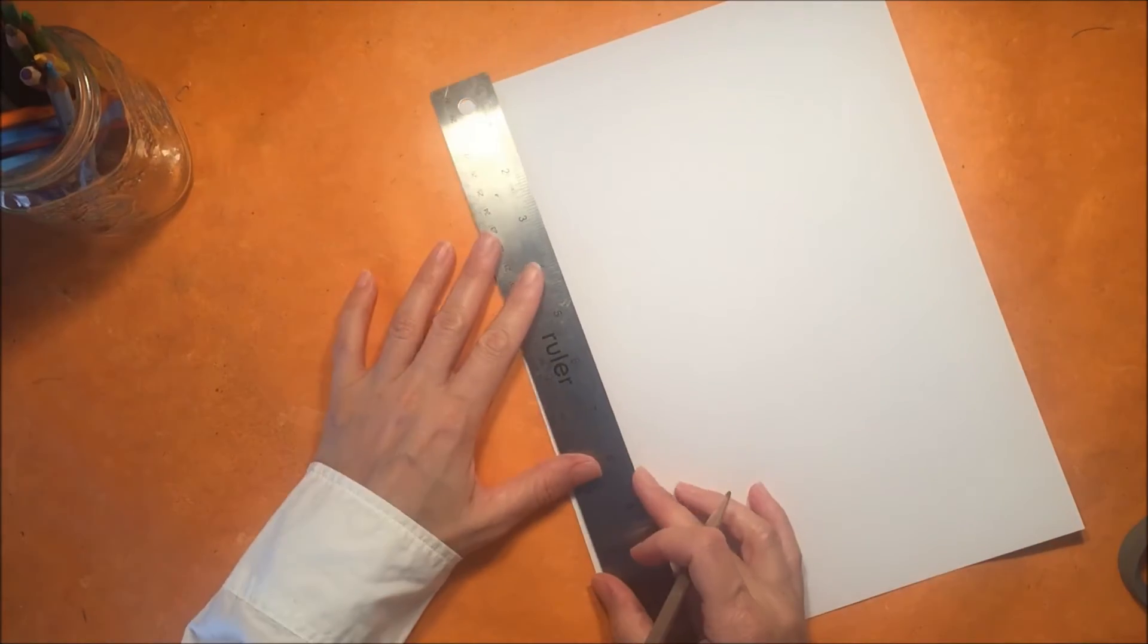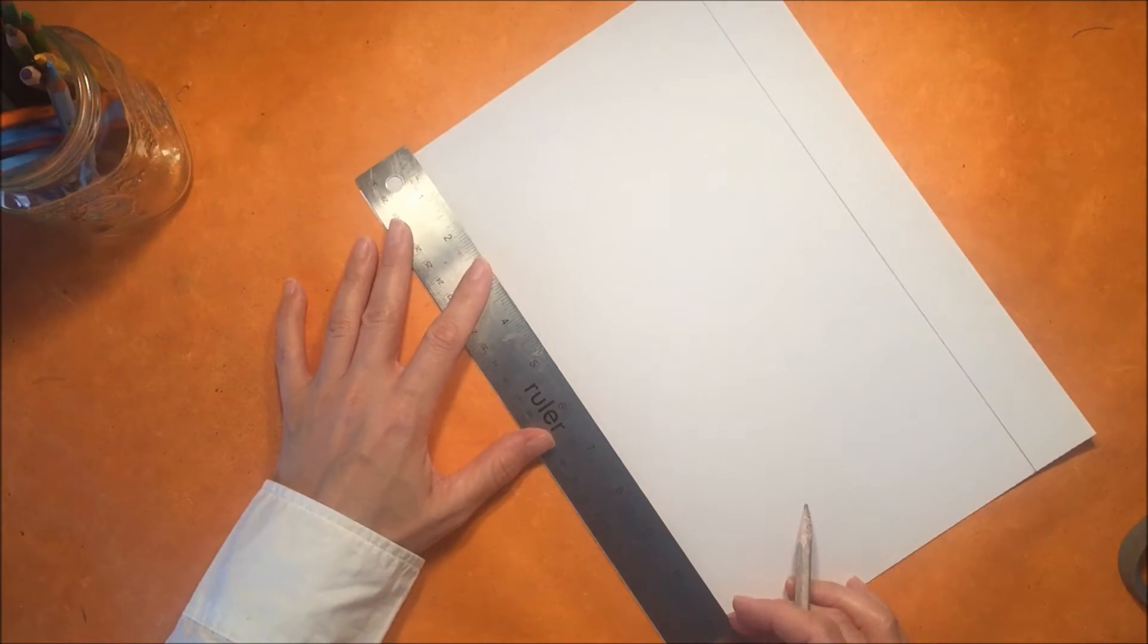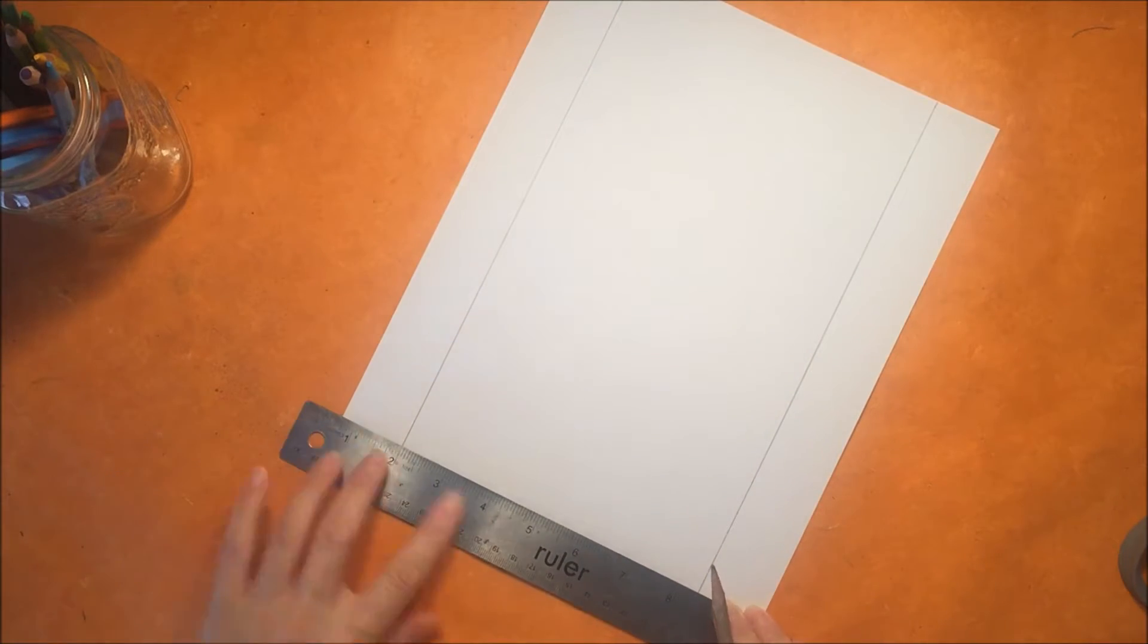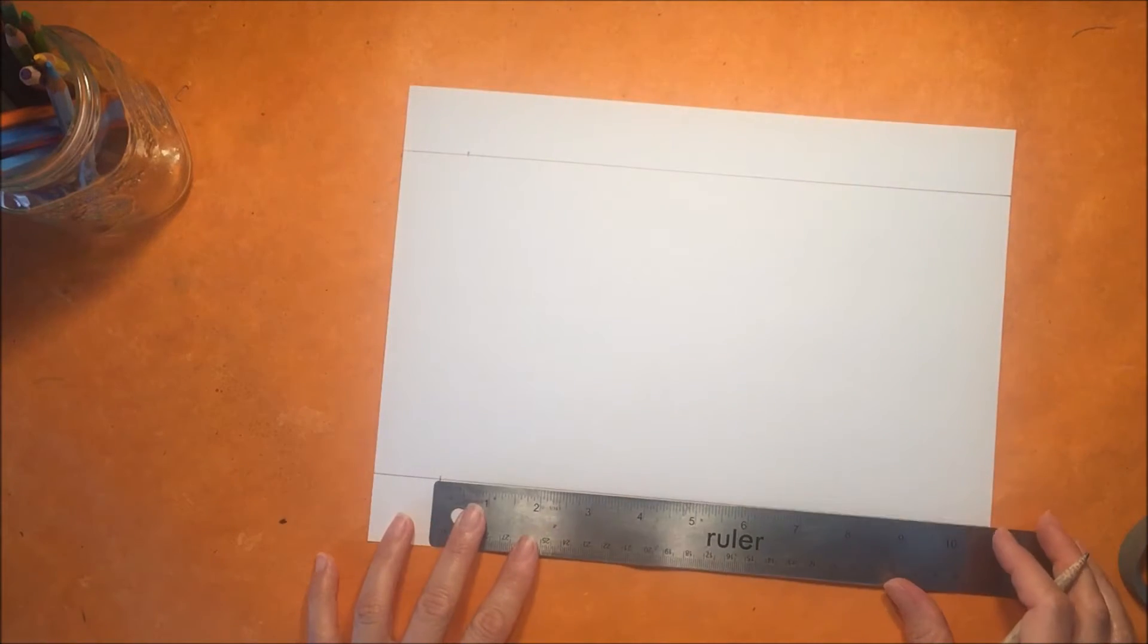The first thing you want to do is draw parallel lines approximately one inch from the top and the bottom of the page. Then we're going to make approximately 10 increments that are spaced one inch apart at the top and the bottom.